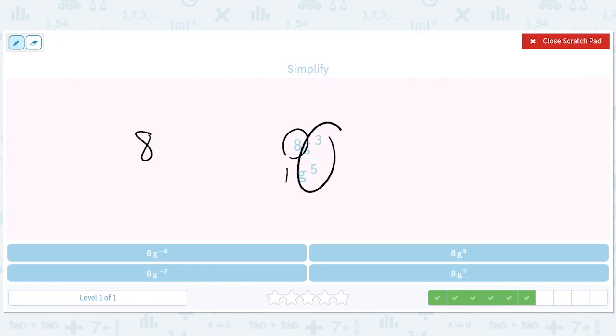And then this is g to the 3 minus 5. So this is g to the negative 2nd. So we have 8 times g to the negative 2nd.